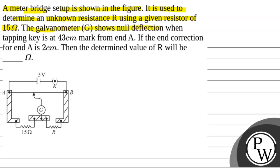The galvanometer G shows null deflection when tapping key is at 43 cm mark from end A. If the end correction for end A is 2 cm, then the determined value of R will be. So we will solve this question.